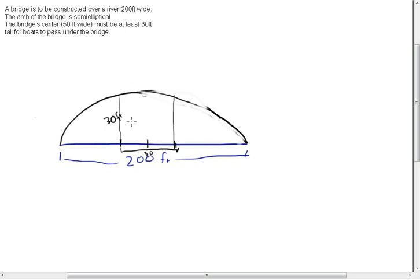So, now we must find an equation to represent this ellipse. Well, our general form for horizontal shaped ellipses is x minus h squared over a squared plus y minus k squared over b squared is equal to 1.